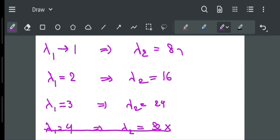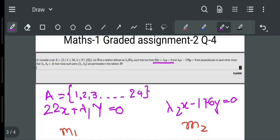So we get three pairs of lambda 1 comma lambda 2, which is 1 comma 8, 2 comma 16, and 3 comma 24. So the answer is three. Thank you.